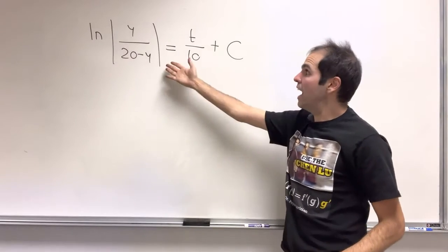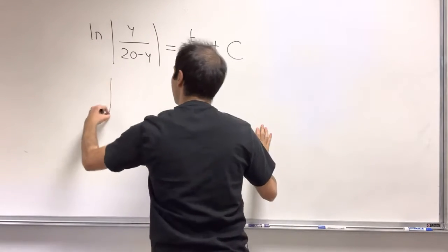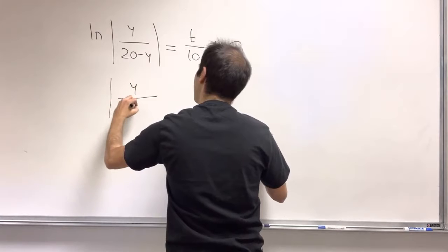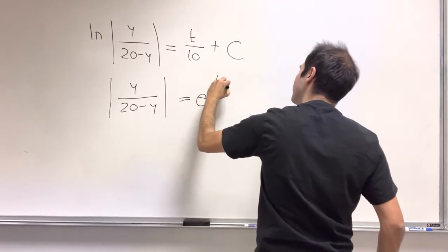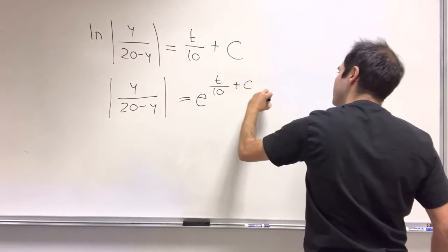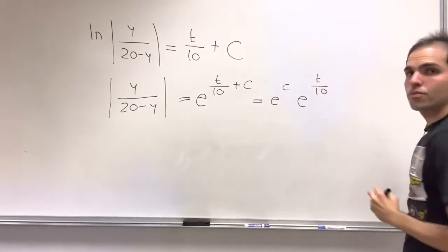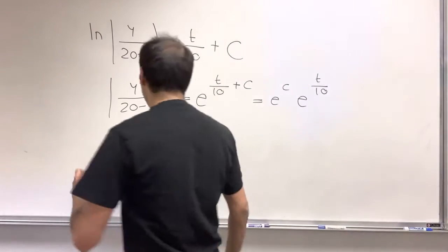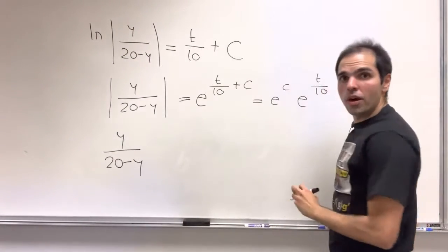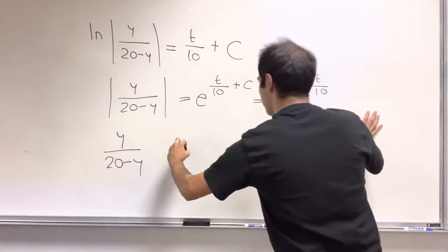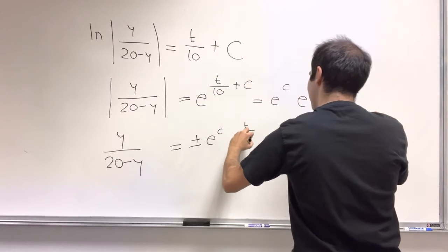The nice thing is, now, we can actually solve for the thing that's inside. So what we get is y over 20 minus y. We just exponentiate this. So e to the t over 10 plus c, which is e to the c times e to the t over 10. And then, to remove the absolute values, you just do plus minus. So y over 20 minus y equals plus or minus e to the c, e to the t over 10.